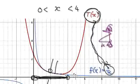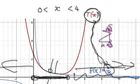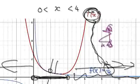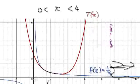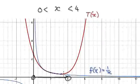Don't use a Taylor series for anything beyond this interval. Only use the Taylor series for this interval here — x greater than 0 and less than 4.